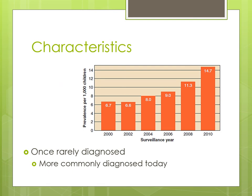While autism spectrum disorder used to be rarely diagnosed, it is much more commonly diagnosed today. Prevalence per 1,000 children was 6.7 in the year 2000, whereas in 2010 that estimate rose to about 14.7 per 1,000 children. Why we're seeing this rise is unclear — whether there is something environmental, or whether we've just understood it better and relaxed our diagnostic criteria.